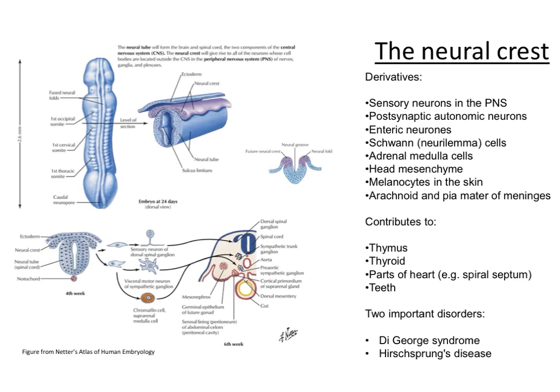In this video, I just want to talk very briefly about a very specialist population of cells which are extremely prominent during the development of the nervous system. These cells are known as the neural crest and are derived from the ectoderm which invaginates to form the neural tube.